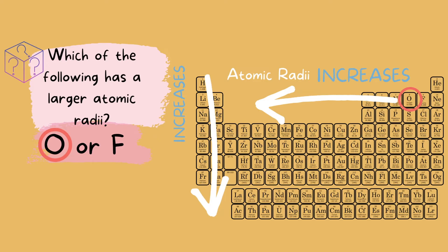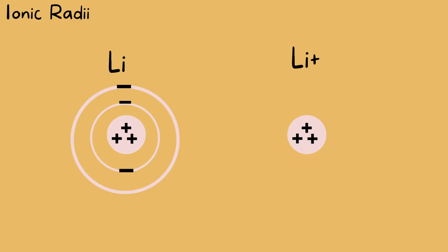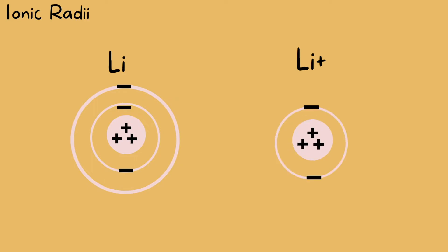Associated with atomic radii is ionic radii — ionic referring to ions, like cations with a positive charge and anions with a negative charge. Here we have lithium in its neutral form and its ionic form with a plus one charge. Lithium has three protons in both forms. In its neutral form it has three electrons, and because it has a one-plus charge, it must have only two electrons in its ionic form.